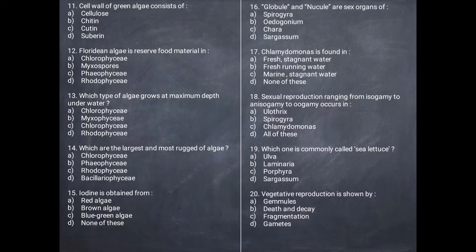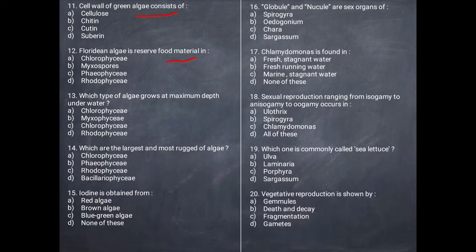Next question: Which type of algae is Chlorophyceae? Chlorophyceae consists of green algae, and its cell wall consists of cellulose.